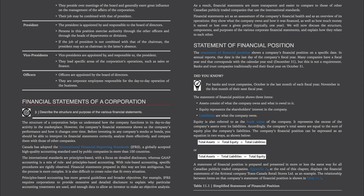Financial statements prepared under rule-based accounting are less ambiguous, but the process is more complex, and it is also difficult to create rules that fit every situation. Principles-based accounting has more general guidelines and broader objectives. For example, IFRS requires corporations to provide extensive and detailed disclosure to explain why particular accounting treatments are used, and enough data to allow an investor to make an objective analysis. As a result, financial statements are more transparent and easier to compare. Financial statements act as an assessment of the company's financial health and as an overview of its operations, showing what the company owns and how it was financed, as well as how much money it earned or lost over a given period, typically one year.